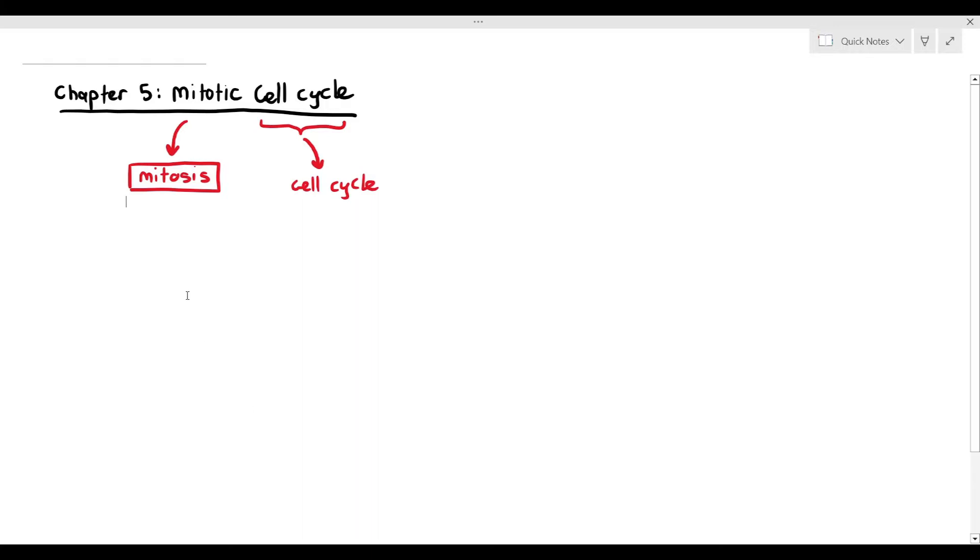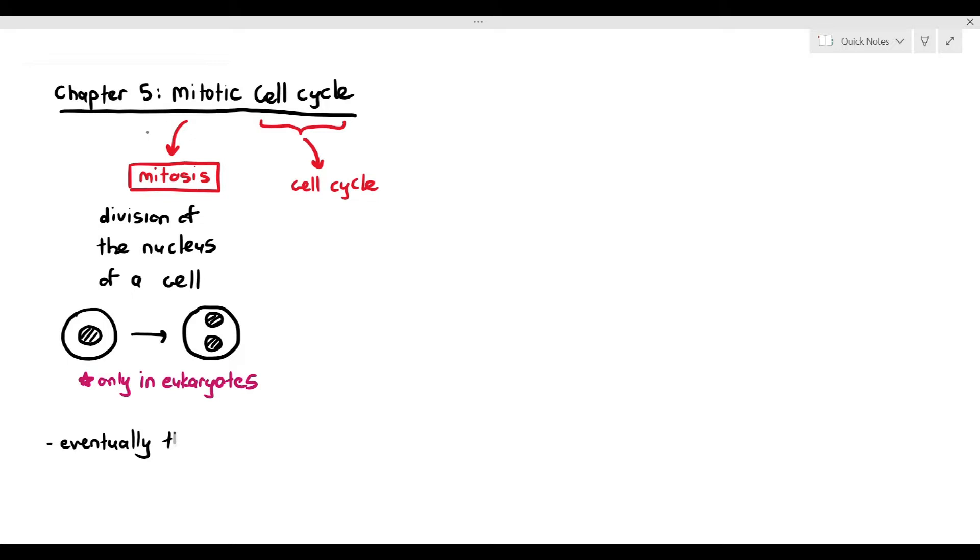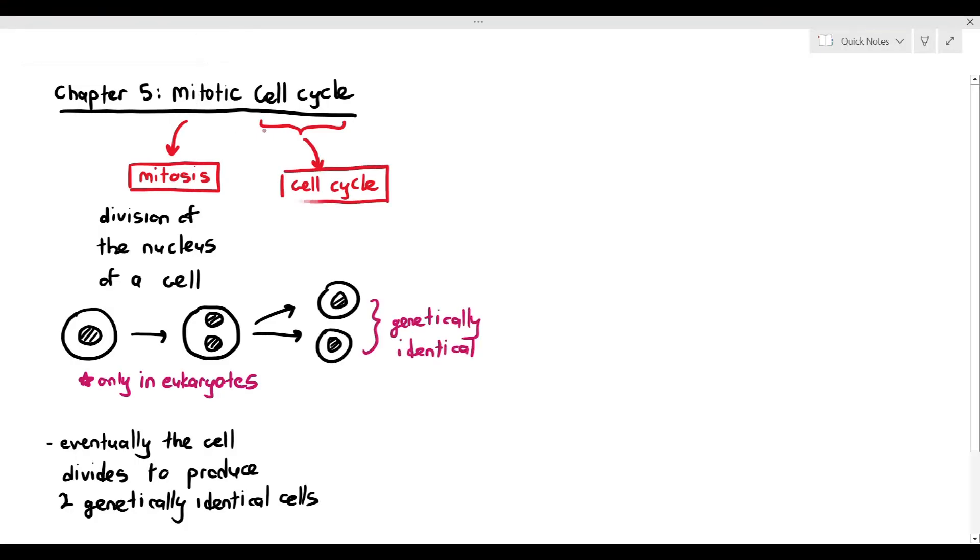Mitosis is, very simply put, a division of the nucleus of a cell. So as you can see here, you have one cell, and when the cell undergoes mitosis, it is still just one cell. But the difference is the cell now has two nuclei. Nuclei is the plural for nucleus. So you have two nuclei in the cell, and this only occurs in eukaryotes, because based on chapter 1, eukaryotes are cells that have nucleus. It cannot happen in prokaryotes. So why would the cell divide its nucleus to become two? Well, because eventually the cell will then divide. The cell itself will divide to produce two genetically identical cells. We will talk about the process of mitosis later.